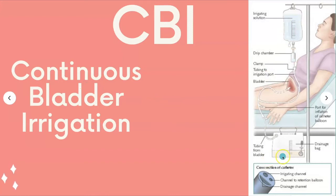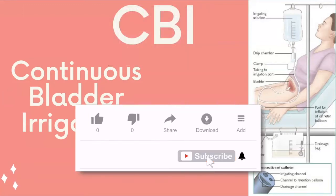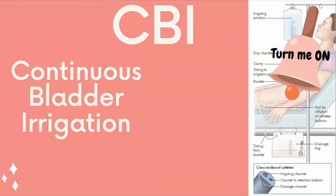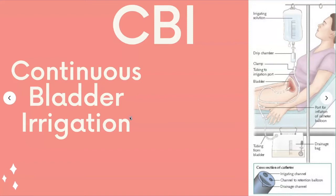CBI is continuous bladder irrigation. It can help prevent urinary tract obstruction by flushing out small blood clots that form after prostate or bladder surgery, and may also be used to treat an irritated, inflamed, or infected bladder lining. With CBI, there's a three-way catheter that allows irrigation solution to flow into the bladder through one lumen and flow out through another, while the third lumen inflates the balloon that holds the catheter in place.